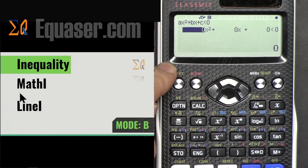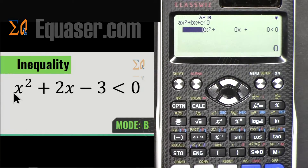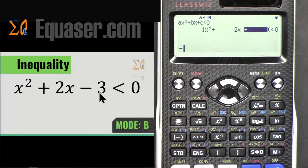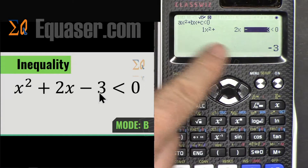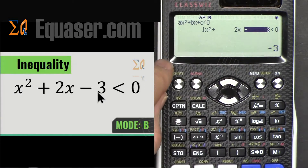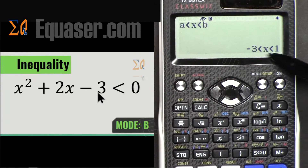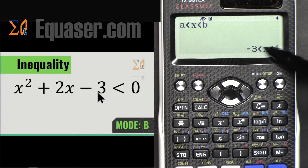For the first coefficient we enter 1, then press the equal sign. For the second coefficient we enter 2, then press equal. The last coefficient is minus 3 — press the minus key, then 3, and press equal.